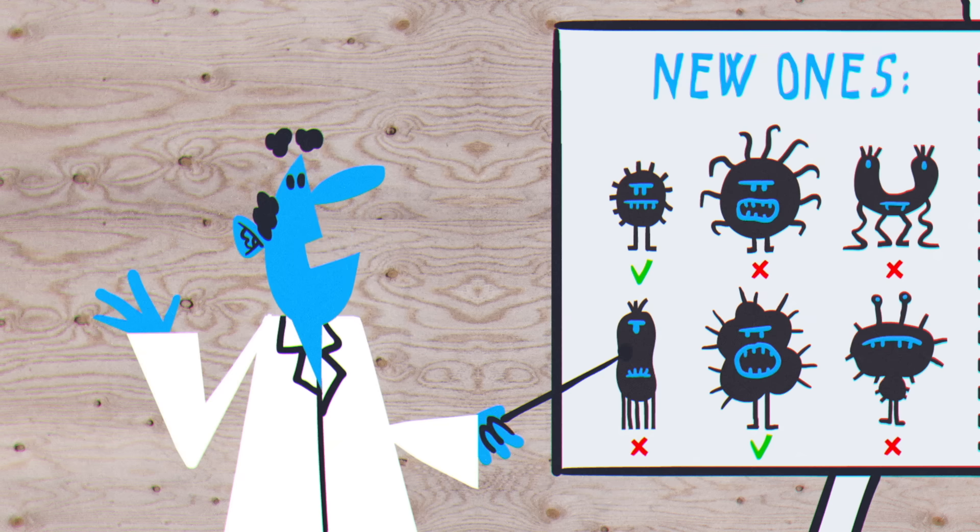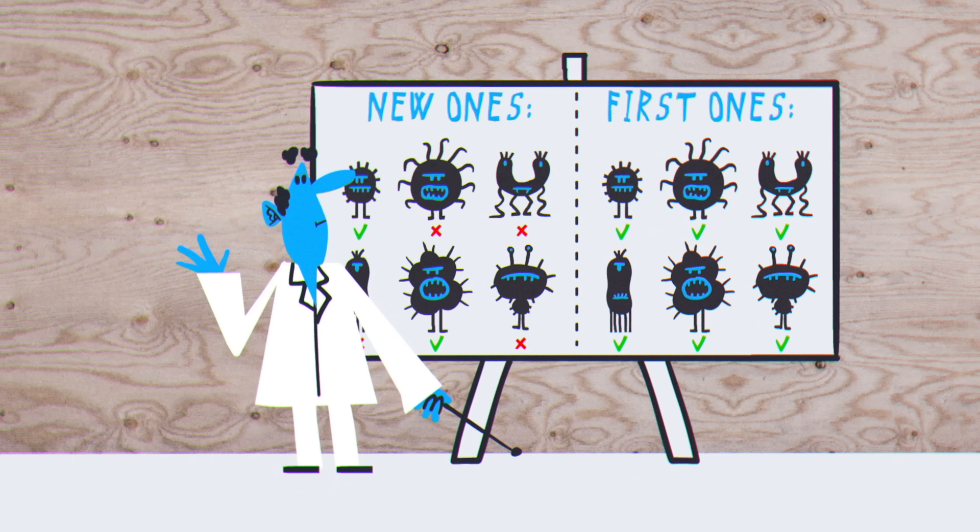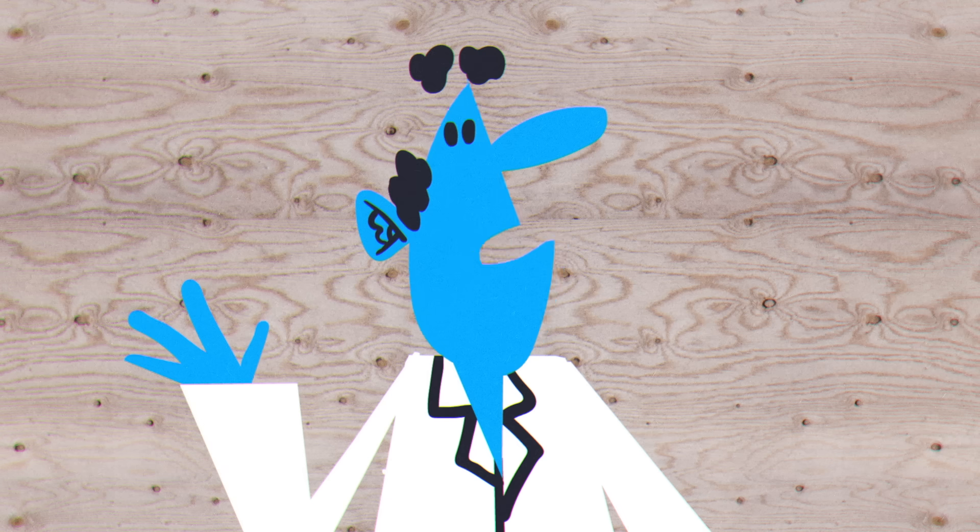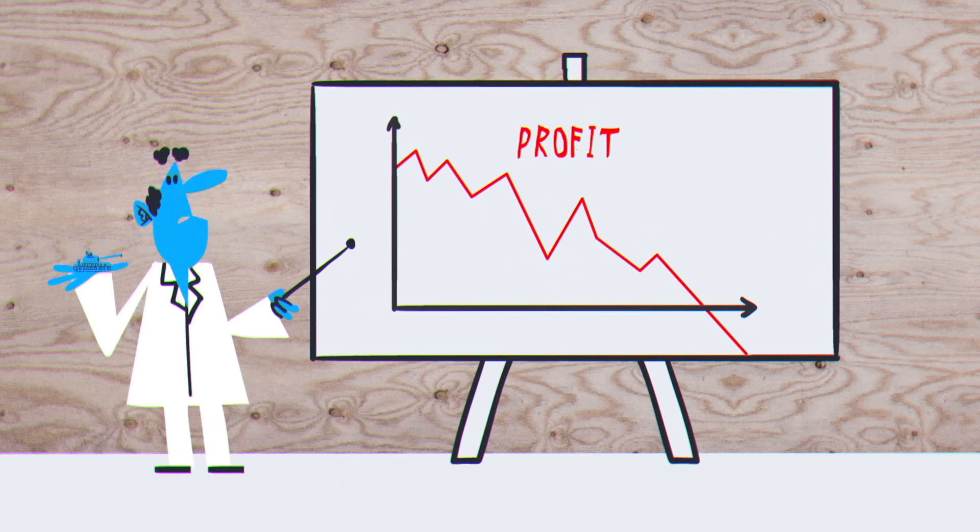Newly discovered antibiotics were often only effective for a narrow spectrum of infections, whereas the first ones had been broadly applicable. This isn't a problem in itself, but it does mean that fewer doses of these drugs could be sold, making them less profitable.